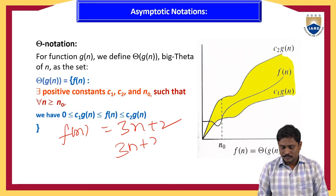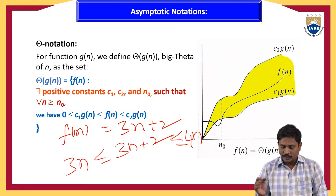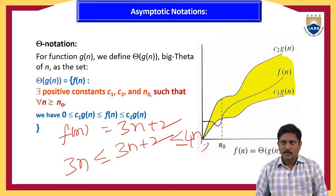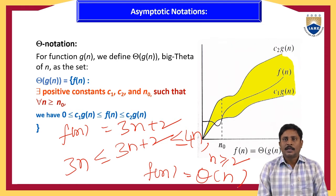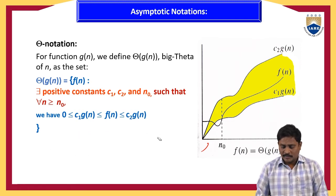We check 3n + 2 ≥ 4n. For n = 1, not satisfied. For n = 2: 8 ≥ 8, satisfied. So for n ≥ 2 this condition is satisfied, and we write f(n) as Θ(n). Theta is used to represent average case complexity.